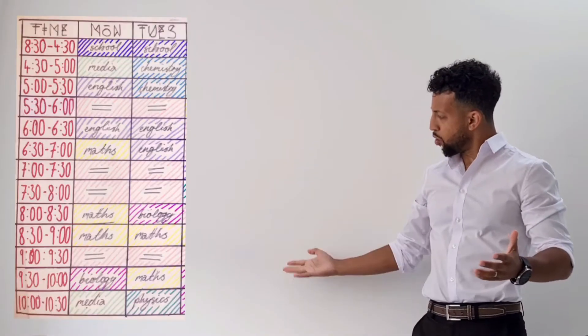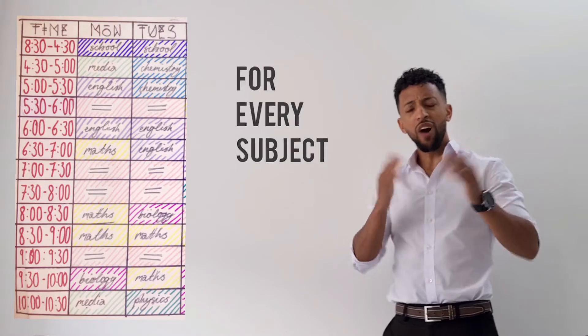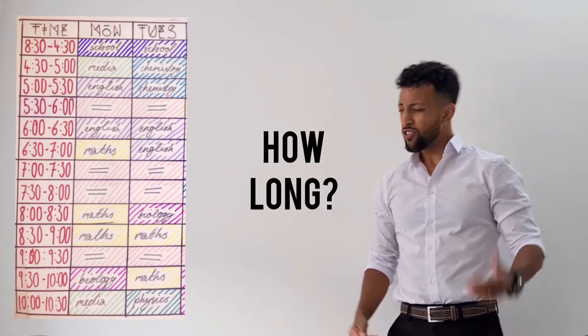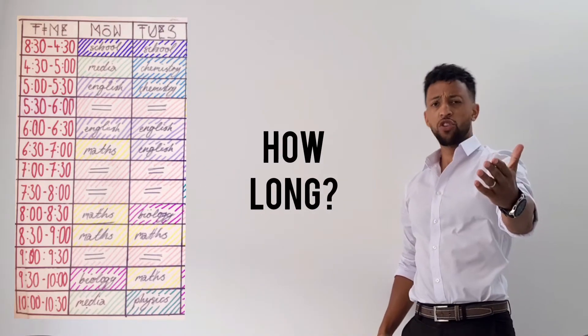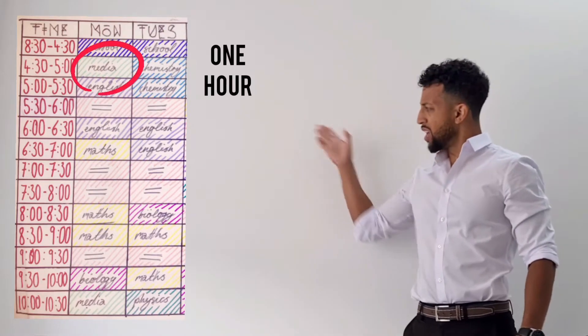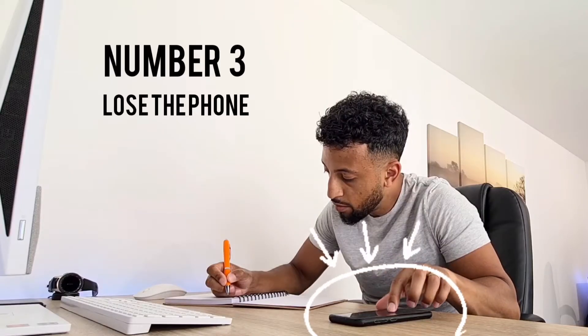Number 2: make yourself a timetable of every subject you need to revise in full. How long to take the subject — that's where you choose. If it's calm, take one; if it's hard, take two.